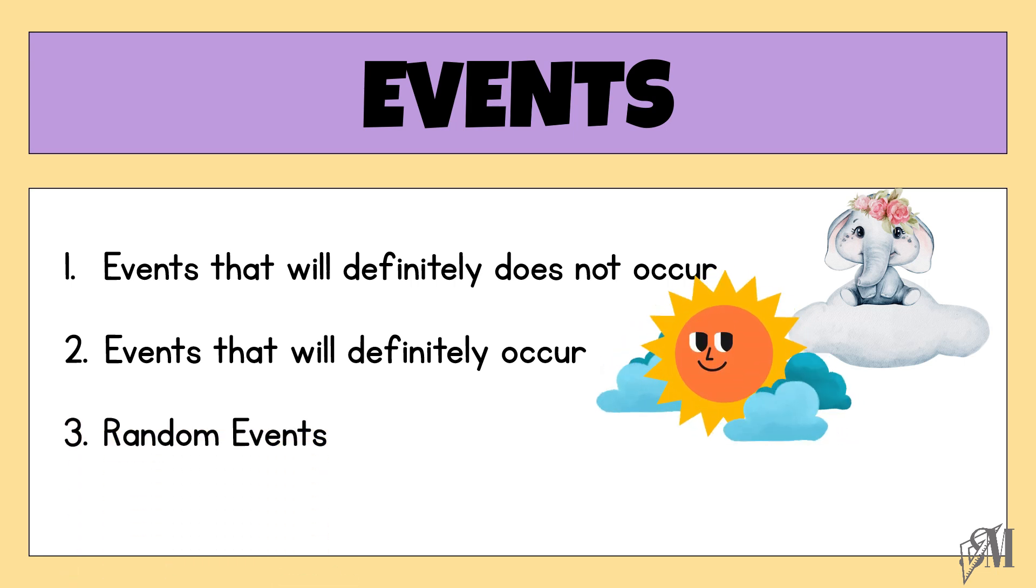The next type of events are called random events, where the outcomes are random and cannot be predicted, just like tossing a coin or rolling a die. Now let us do an activity to study these types of events further.